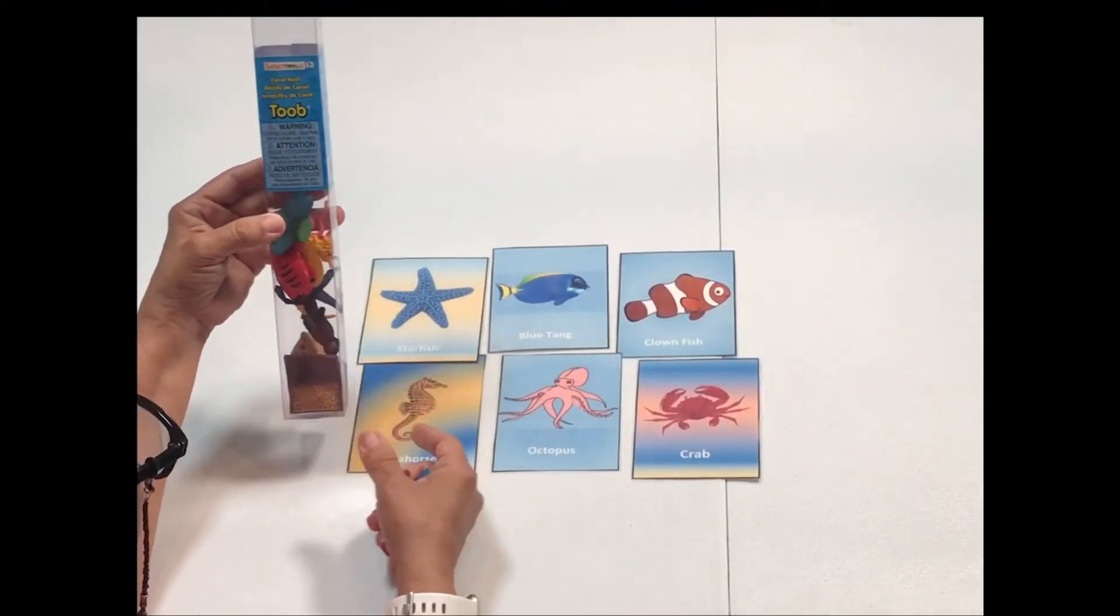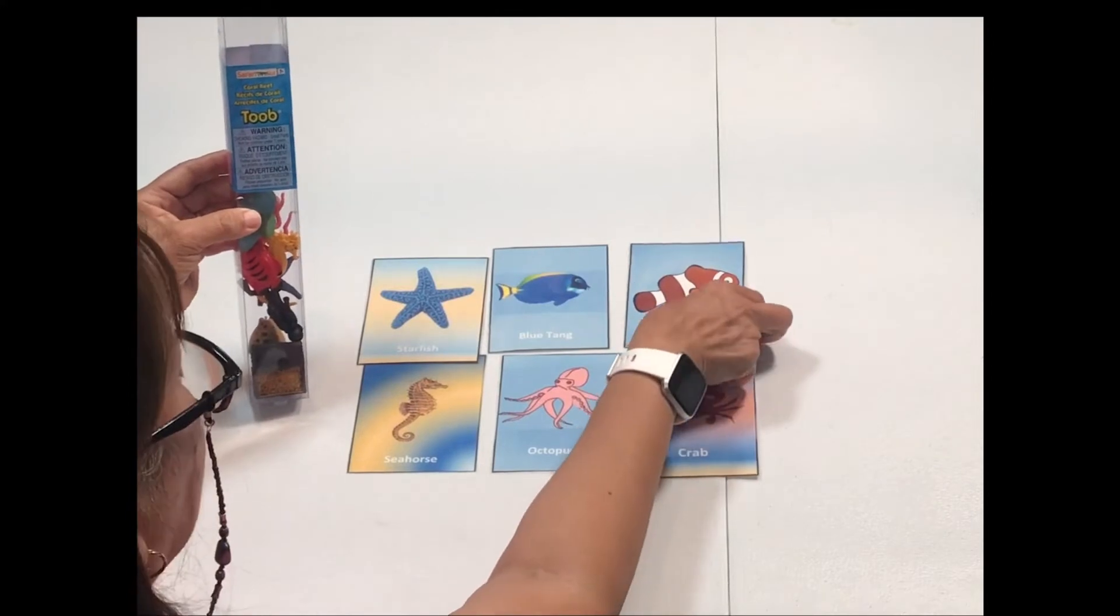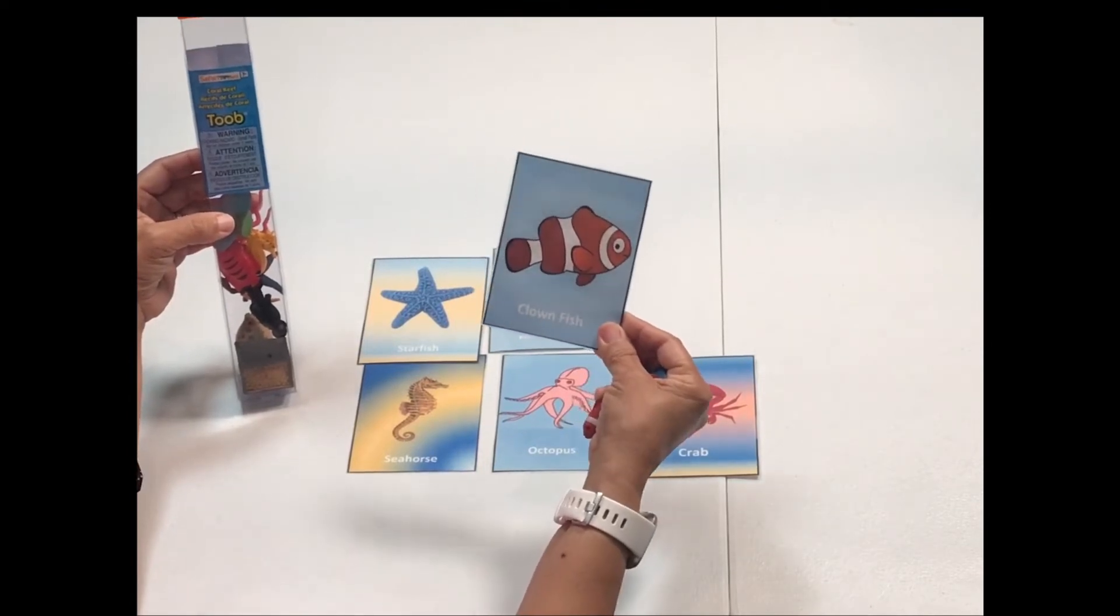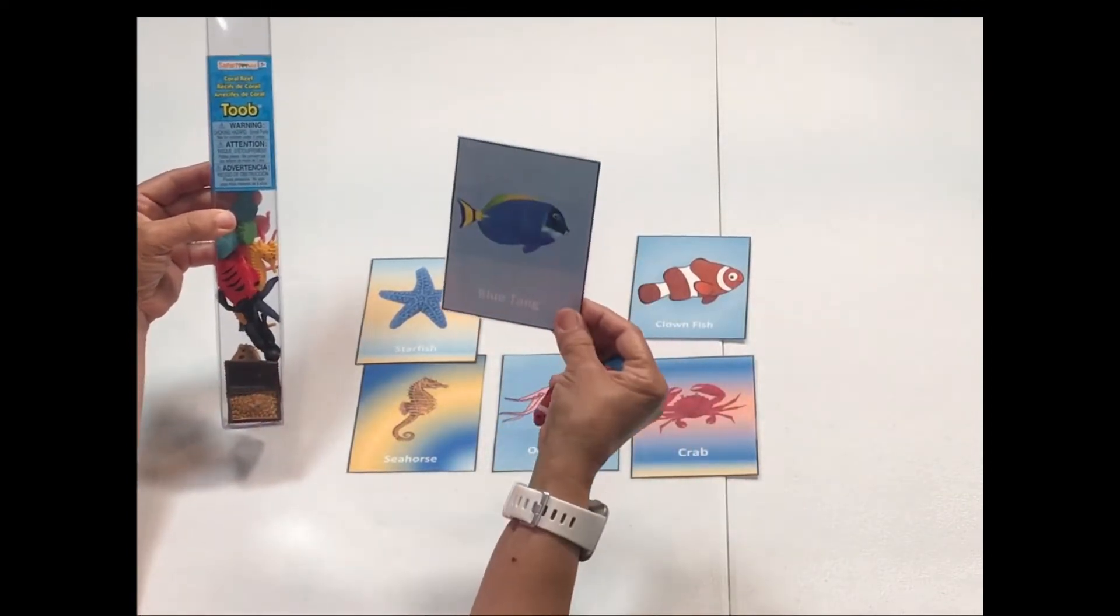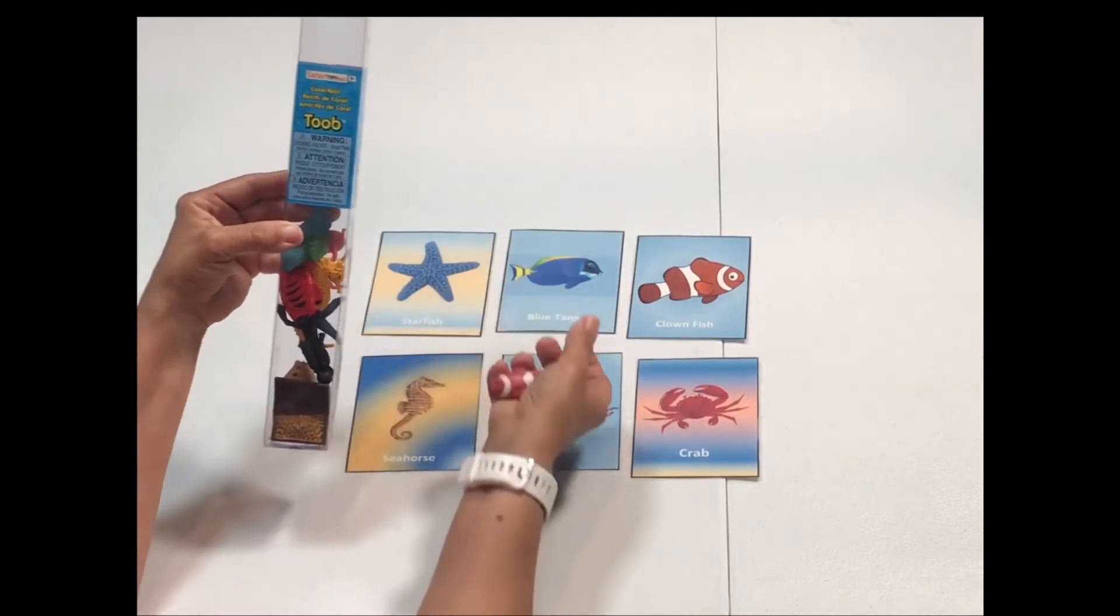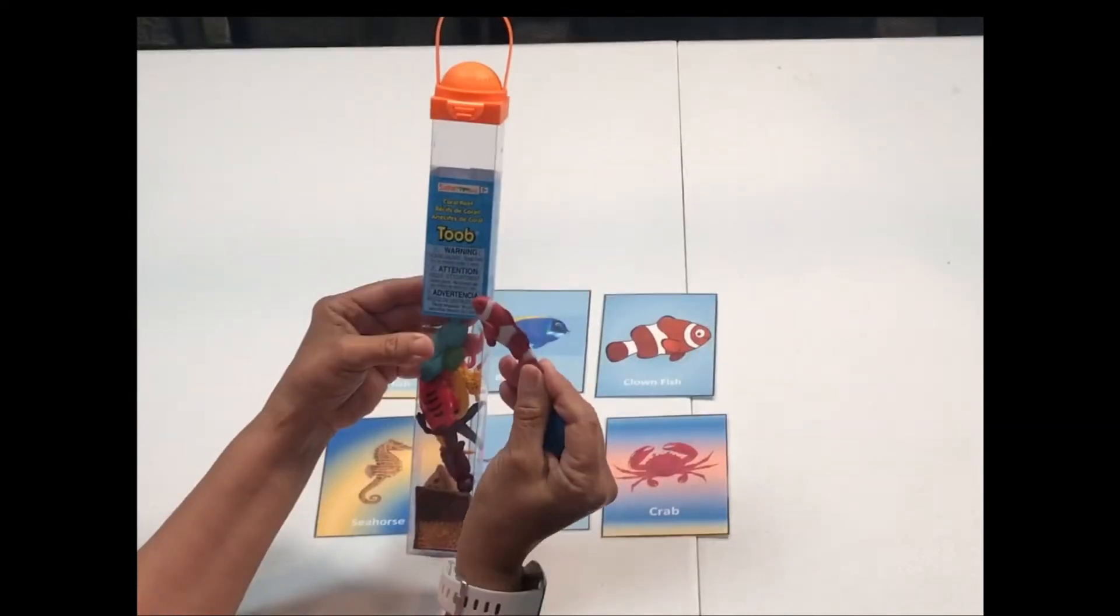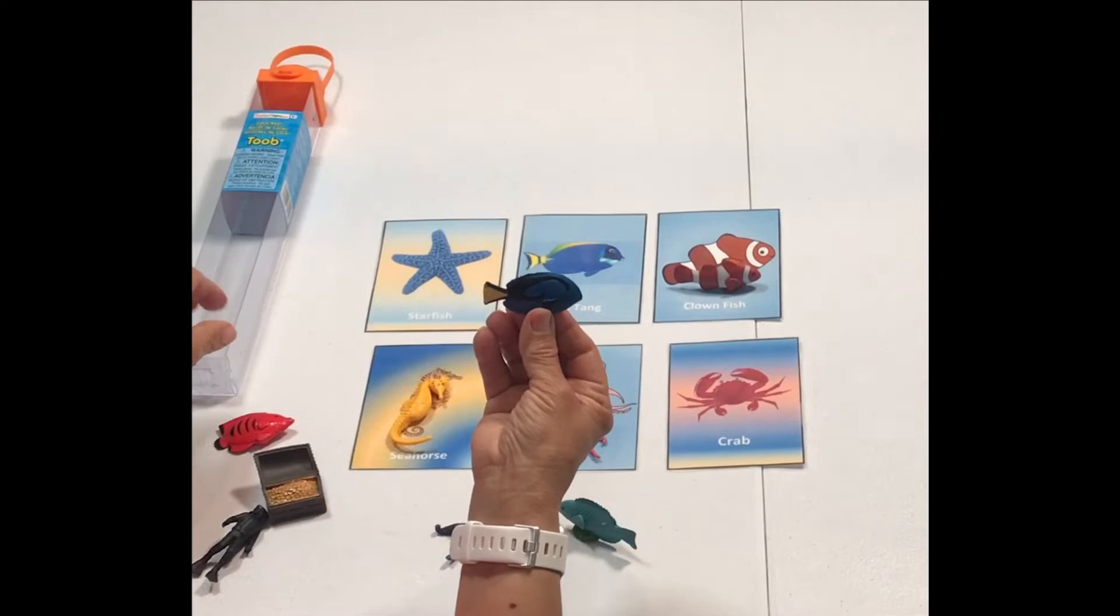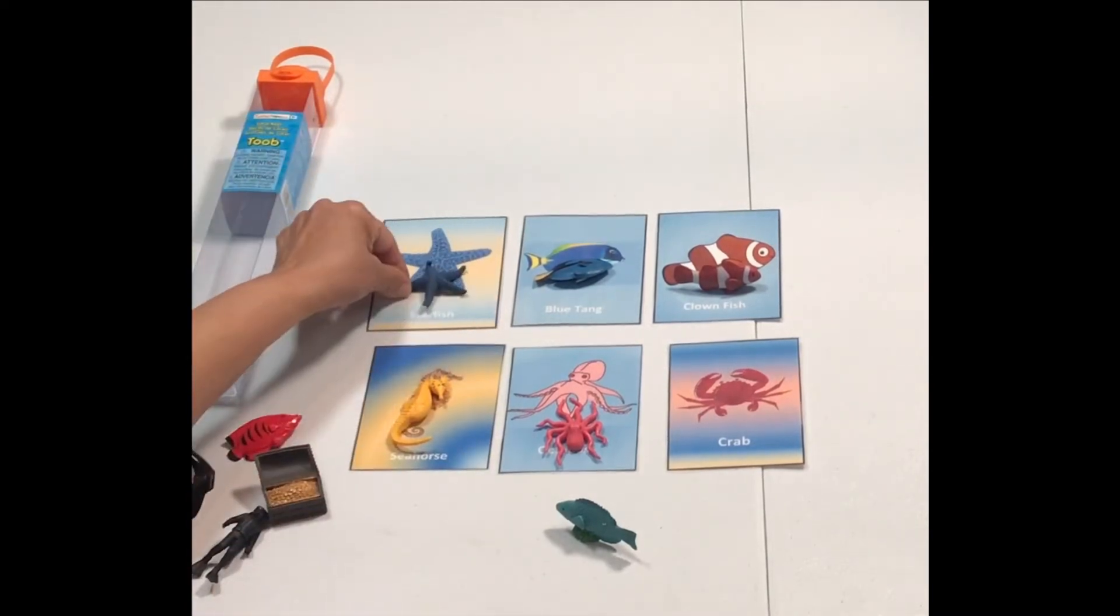For this activity I put together some flashcards and we are going to be learning the name of the sea animals. Like my grandson when he saw this he said it was Nemo, so we're going to learn that this is a clown fish. This is not Dory, this is a blue tang. Starfish and so on. I'm also using the Safari LTD coral reef sea animals. They are so realistic. We're going to match them with our cards.